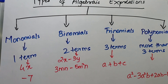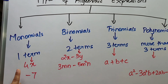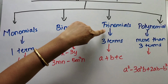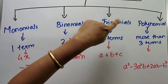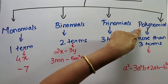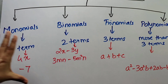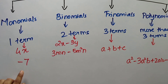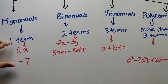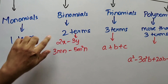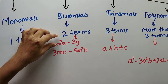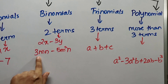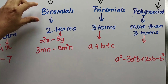What are monomials? Let us see an example of each. As you can see, 4x is a single term and minus 7 is again a single term, so they come under monomial. Now, 2x minus 3y contains two terms — 2x and minus 3y — so they come under binomials. You can even see another example that contains two terms, so it also comes under binomials.